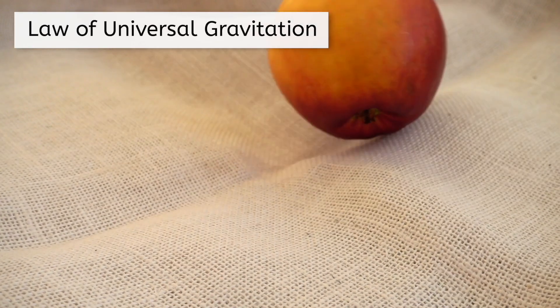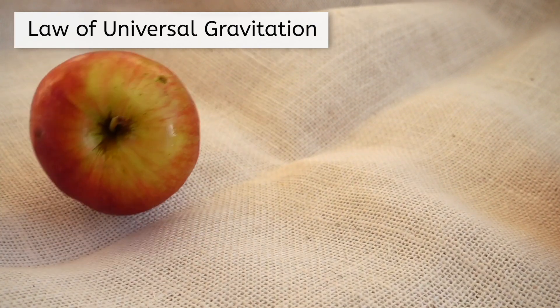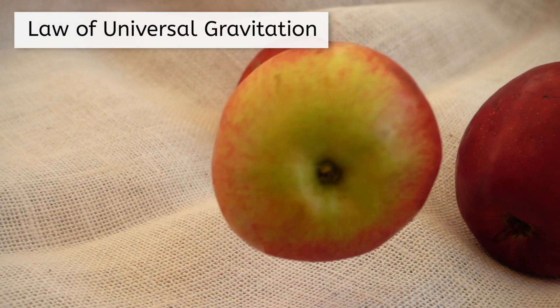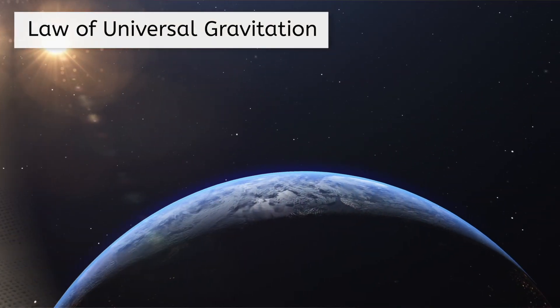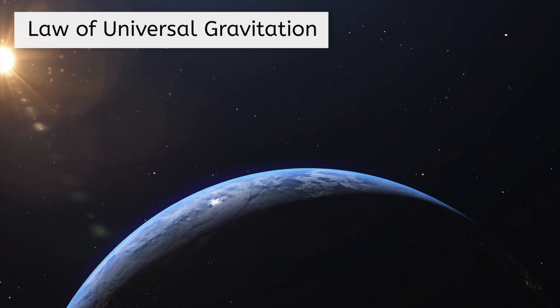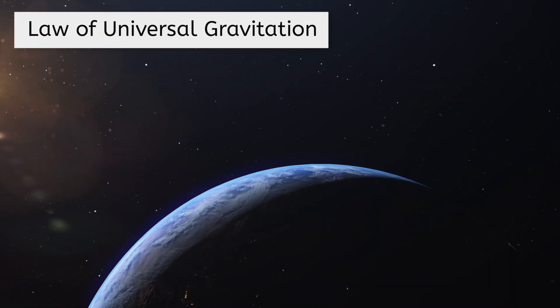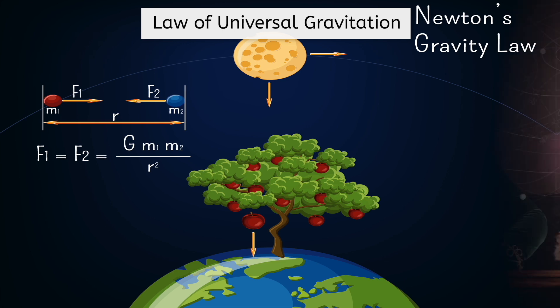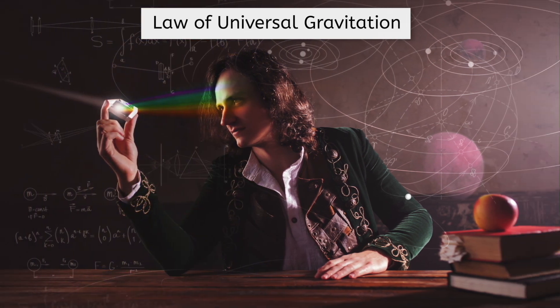Newton also came up with a law of universal gravitation that unifies the actions of gravity on Earth, such as an apple falling from a tree, and the actions of gravity in space that cause planets to orbit stars. With one equation, he was able to predict the force involved in any of these scenarios. He also famously conducted experiments with prisms, determining that white light is made of all the colors of light that can be separated under the right conditions.